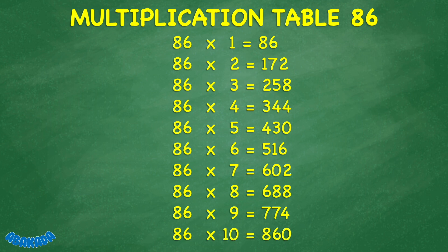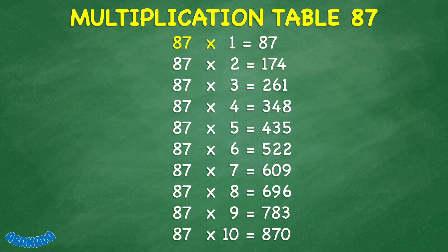86 times 10 equals 860. 87 times 1 equals 87. 87 times 2 equals 174. 87 times 3 equals 261. 87 times 4 equals 348. 87 times 5 equals 435. 87 times 6 equals 522. 87 times 7 equals 609.